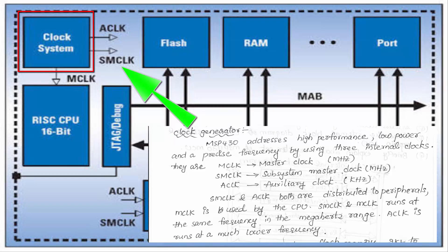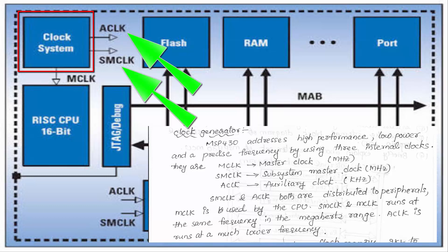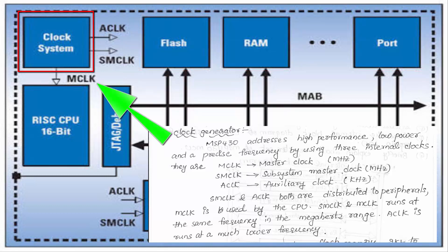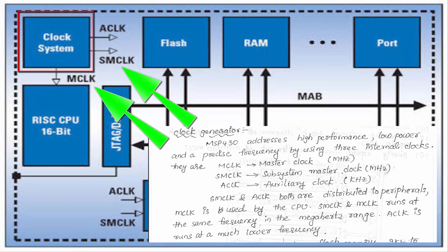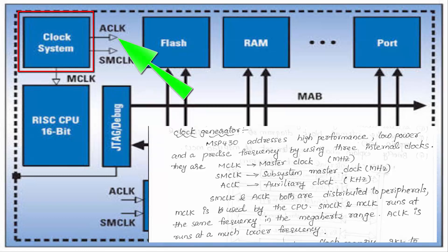The third clock is ACLK, the Auxiliary Clock, with frequency in the kilohertz range. SMCLK and ACLK are both distributed to peripherals, while MCLK is used by the CPU. SMCLK and MCLK run at the same frequency in the megahertz range, and ACLK runs at a much lower frequency.